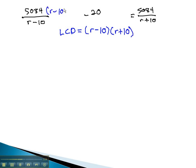And so, we'll multiply each factor, or I'm sorry, each term, by the factors r plus 10, r minus 10.